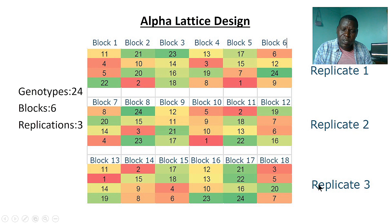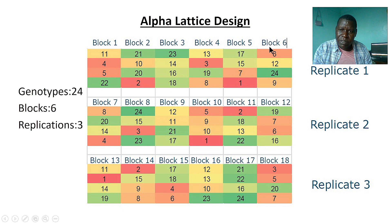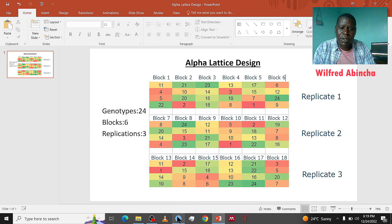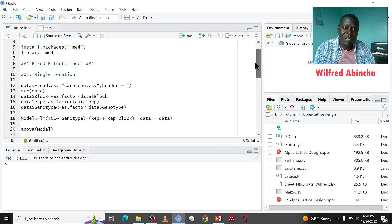We have replication one, two, and three. In each replication, we divide the replication into small blocks that are uniform. We assume block one is uniform, block two is uniform — all of these are uniform. Because we have 24 genotypes divided into six blocks, each block is going to have four genotypes, giving a total of 24. This is how Alpha Lattice Design treatments are arranged.